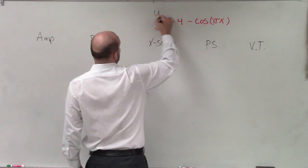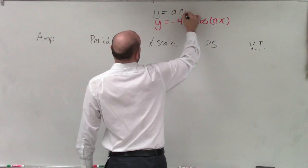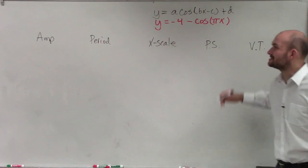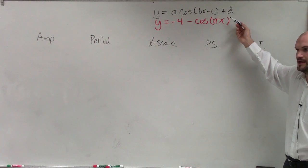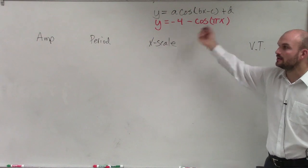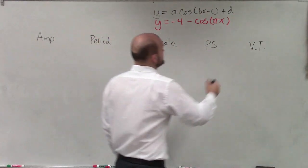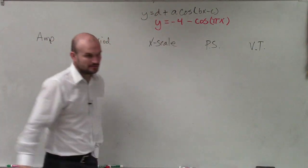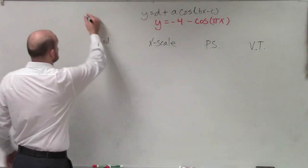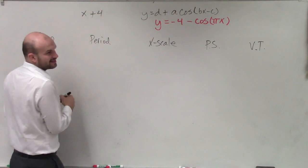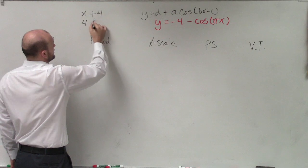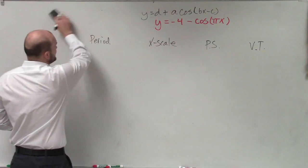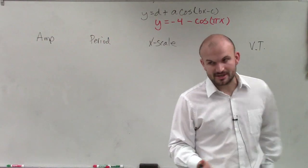So remember, the first thing is y equals a times cosine of bx minus c, plus d. Now in this case, we don't have a d, but we have this number in front. Is it OK if I wrote the d in front? There's nothing wrong with that — we like to write it this way, but you can still write it that way. So the 4 is going to be our d, and that's going to be our vertical translation.